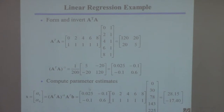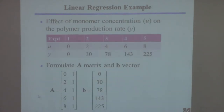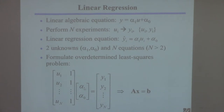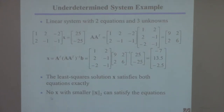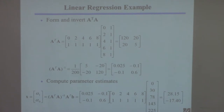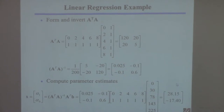Now implement the formula. X is a vector of alpha 1 and alpha 0. To find the least squares solution, compute A transpose A inverse times A transpose times B. Using the inverse just computed, A transpose, and the B vector, you'll find the slope equals 28 and the intercept equals minus 17. If you used the standard statistical method, you'd get the same answer.